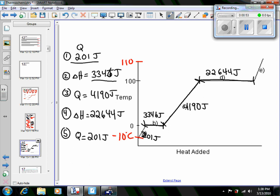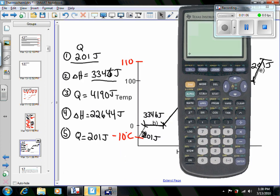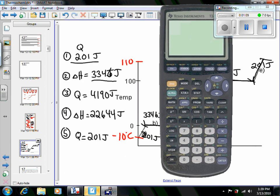And the last step was taking the steam and heating it up to 110 degrees, that was an extra 201 joules. So we really need to add all of those numbers up, bring up our calculator again, and get it to turn on.